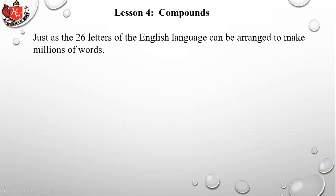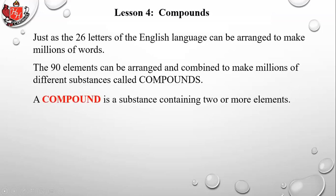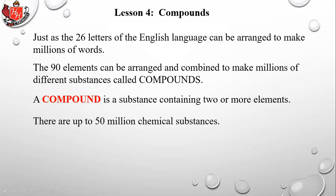Just as the 26 letters of the English language can be arranged to make millions of words, the 90 elements can be arranged and combined to make millions of different substances and compounds. A compound is a substance containing two or more elements, and there are up to 50 million chemical substances made out of just about 90 elements.